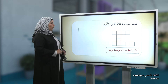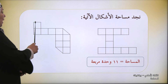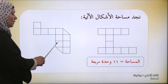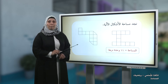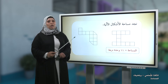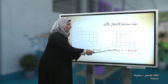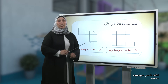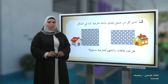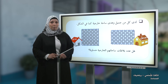وشكل آخر: نقوم بعد الوحدات المربعة: واحد، اثنان، ثلاثة، أربعة، خمسة، ستة، سبعة، ثمانية، تسعة، عشرة. لدينا عشر وحدات مربعة كاملة، وهنا نصف ونصف نحصل على واحد، إذن عشر وواحد يساوي أحد عشر وحدة مربعة. نلاحظ مساحتين متساويتين وشكلين مختلفين.